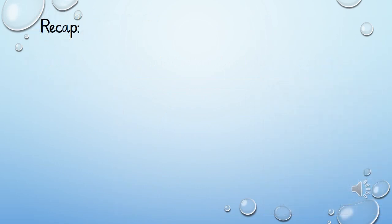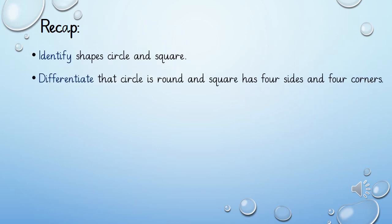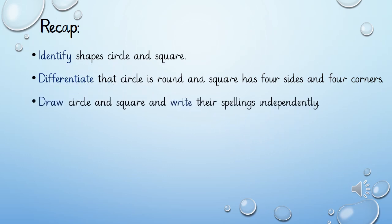Let's revise what we have learned today. Today we have learned about the shapes circle and square. We can now differentiate that circle is round and square has four sides and four corners. We can now draw circle and square and write their spellings as well, and we can find circles and squares in the environment.